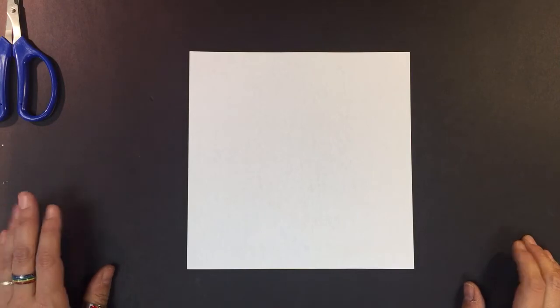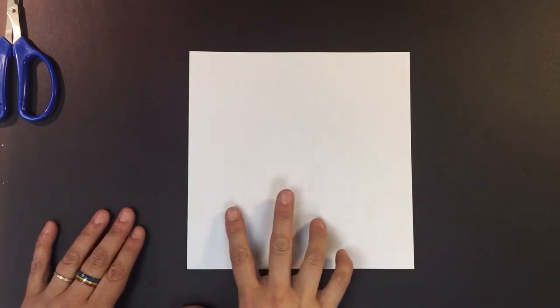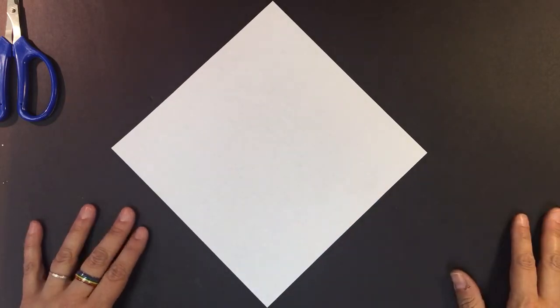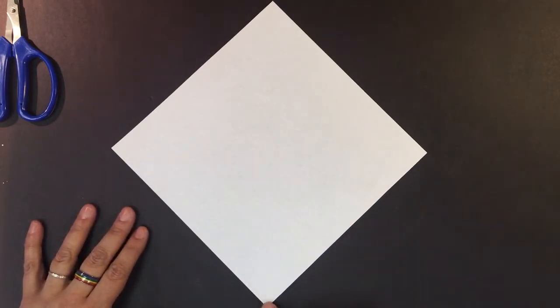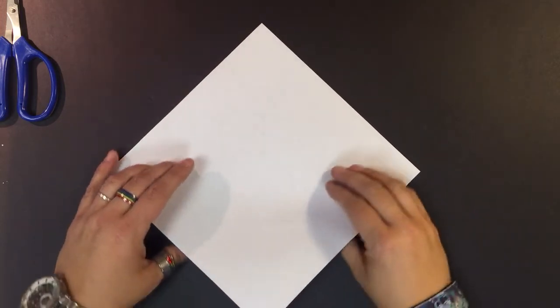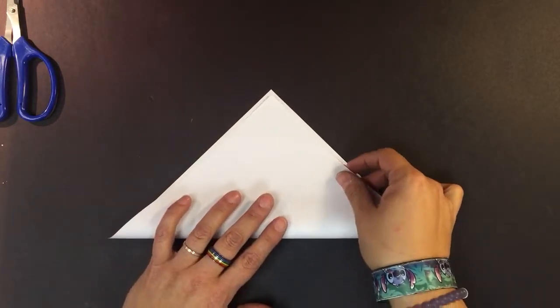Okay, welcome to origami bookmark. It's pretty easy. We're going to start out with a square, turn our square on its corner to make it a diamond. First thing you're going to need to do is put this bottom corner here and fold that up so it matches the top corner like this.